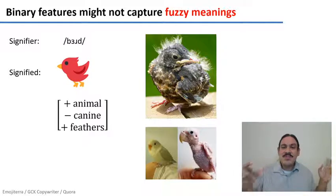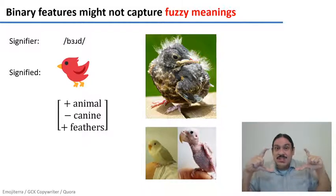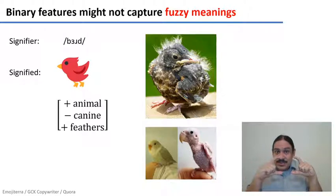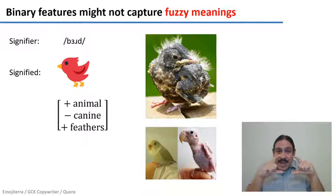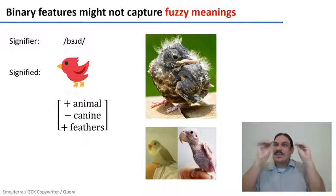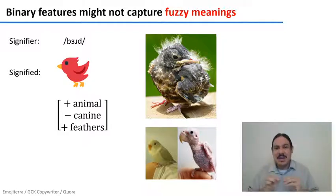So whatever meaning is, it cannot just be a strict set of binary features for definitions. It must be that plus examples of what the word is that go progressively towards the edges of what we're willing to accept as bird.